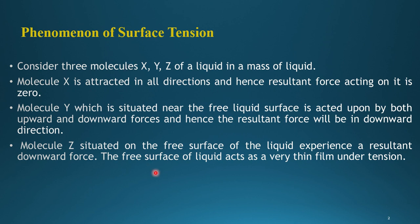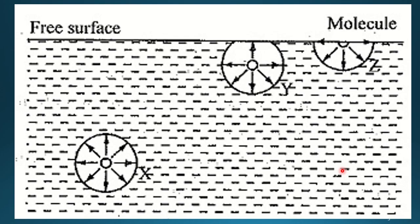To summarize: molecule X is attracted in all directions, so resultant is zero. Molecule Y is near the free surface but mostly inside, so resultant is downward. Molecule Z is exactly on the free surface, half in water and half in atmosphere — the free surface acts as a very thin film under tension. This explains how insects walk on water and why bubbles form in a round shape.